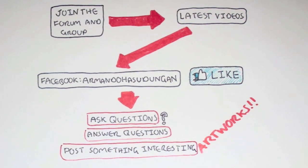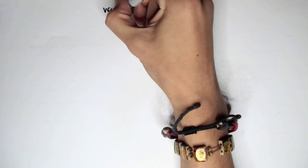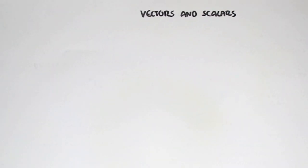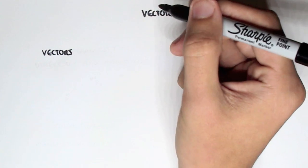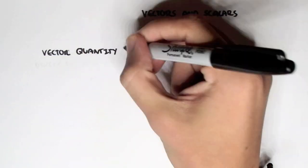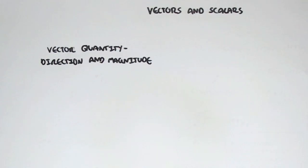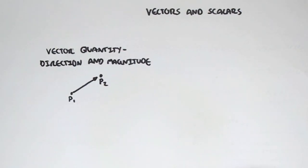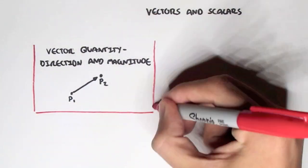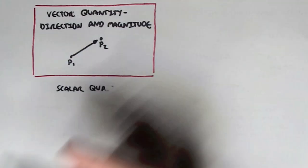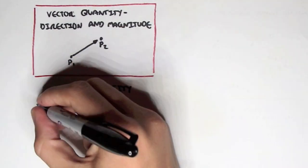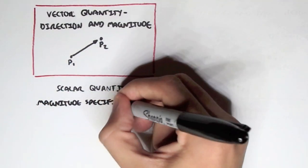In this video, we're going to talk about vectors and scalars, which are important in physics. The difference between vectors and scalars is that a vector quantity has a direction and a magnitude, such as from point 1 to point 2, travelling this way. However, a scalar quantity only defines a magnitude with a specific unit, so we have no direction — we just have a magnitude for a scalar.